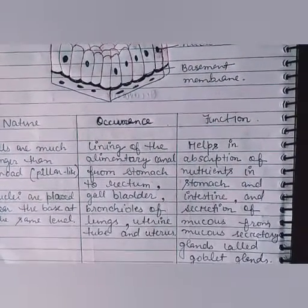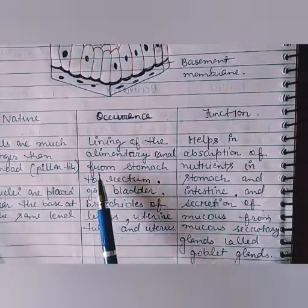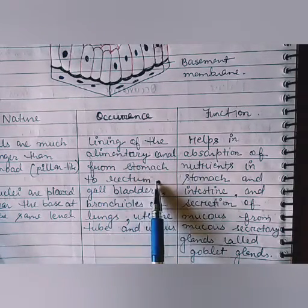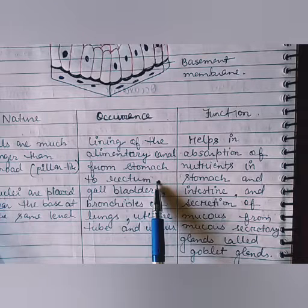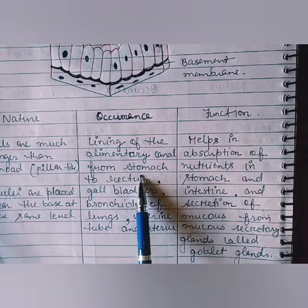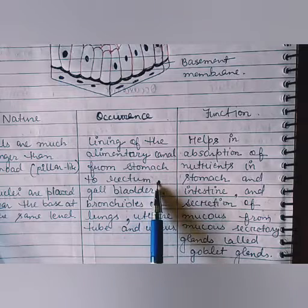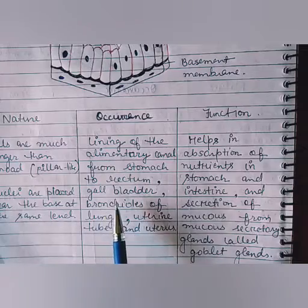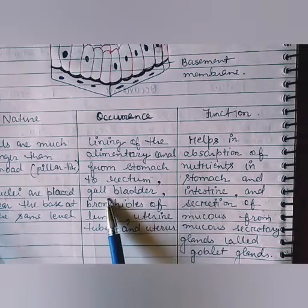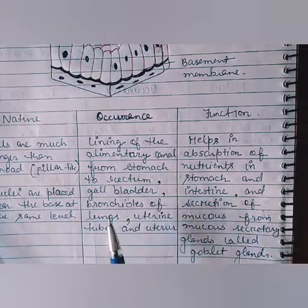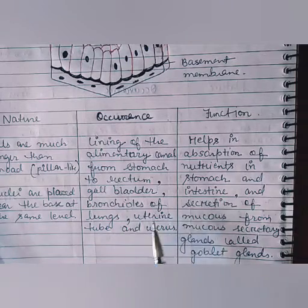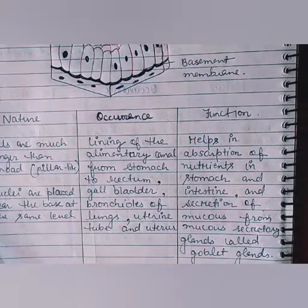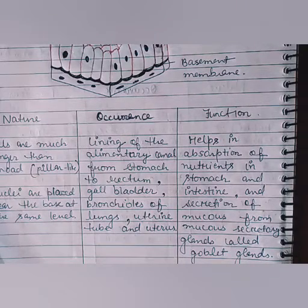Columnar epithelium is found in the lining of the alimentary canal from the stomach to the rectum. The alimentary canal starts from the mouth, but from the stomach to the rectum the lining is formed of columnar epithelium. It also lines the gallbladder, bronchioles of the lungs, uterine tube, and uterus.